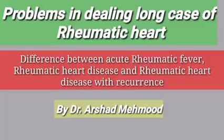So a patient can be in a state of acute rheumatic fever or rheumatic heart disease. The first thing in a long case is that we should differentiate whether the patient is in acute rheumatic fever or rheumatic heart disease. Whenever you suspect the case to be rheumatic heart, you will apply Jones criteria.